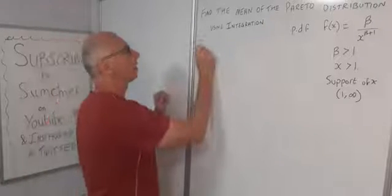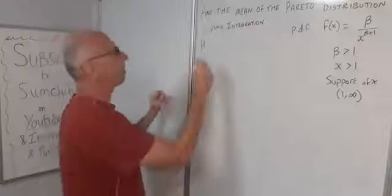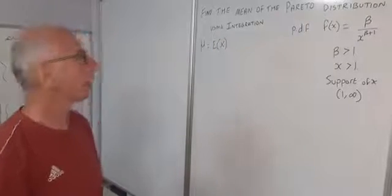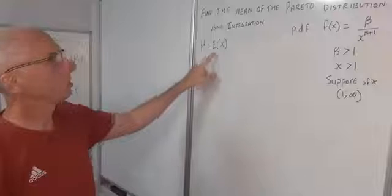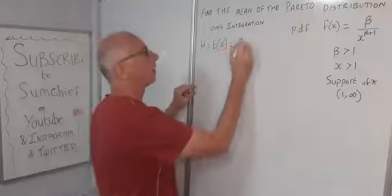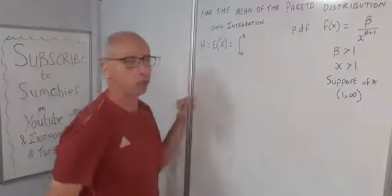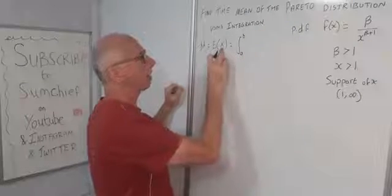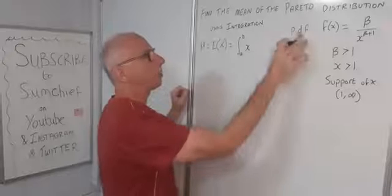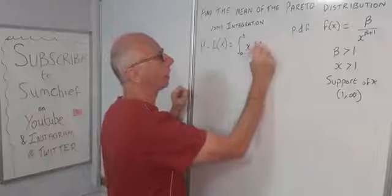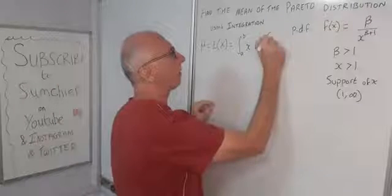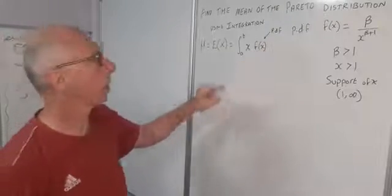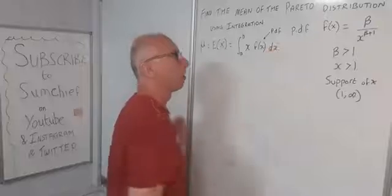So let's find the mean. The mean, denoted by the Greek letter μ, is also the expectation of our random variable x. To find this using integration, we use the formula: integrate from a to b of x times f(x) dx, where a and b are the bounds of the support. Here f(x) is our PDF, and we integrate with respect to x.